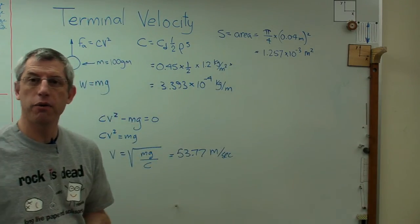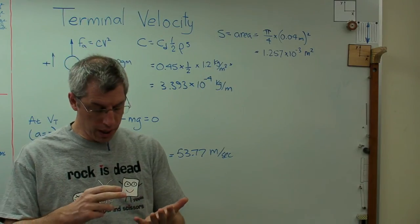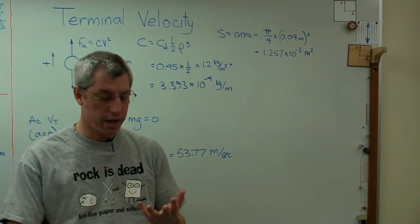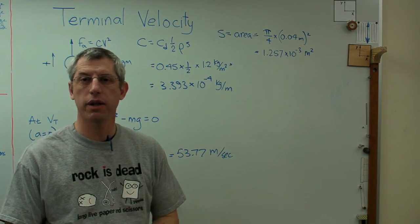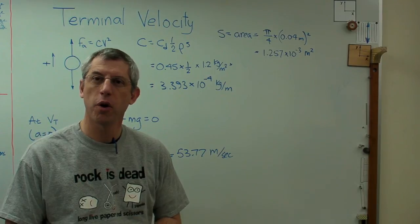So there you go. That's how to figure out terminal velocity. All you need to know is density of air, mass of your object, and its drag coefficient. From there, you can figure that out. That's terminal velocity. Talk to you later. Hope this helps.